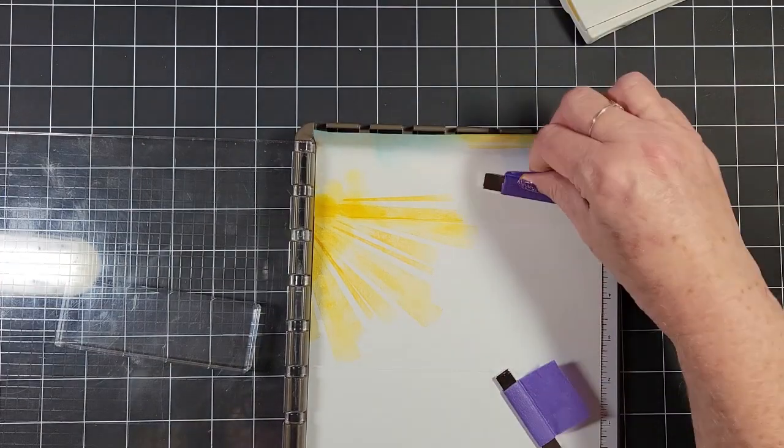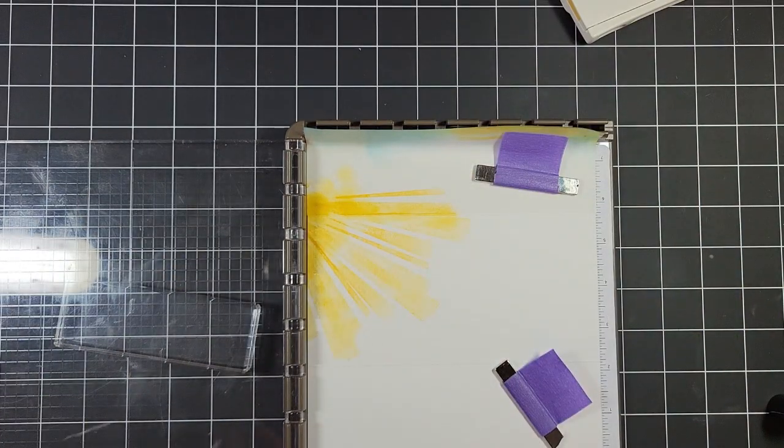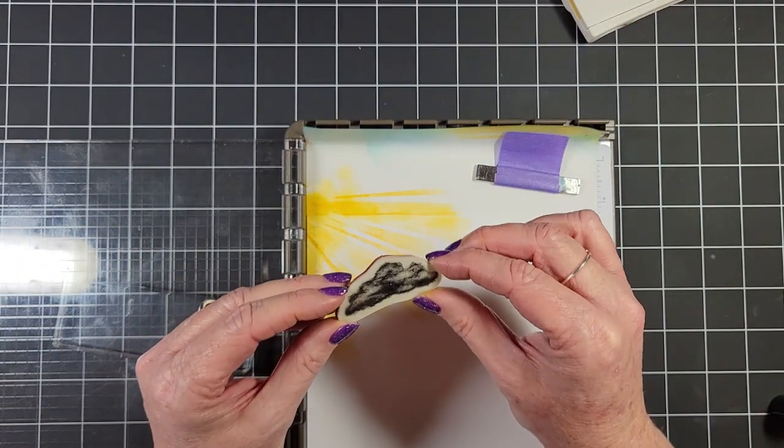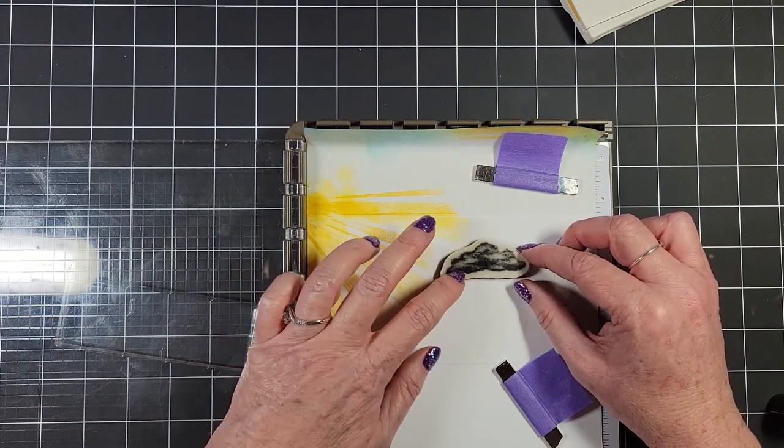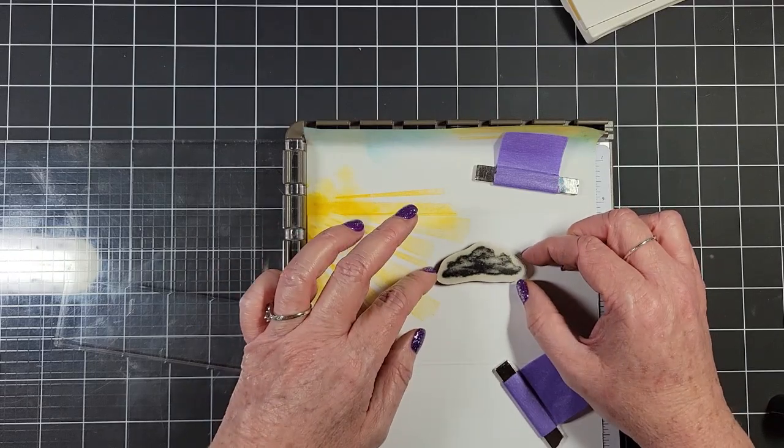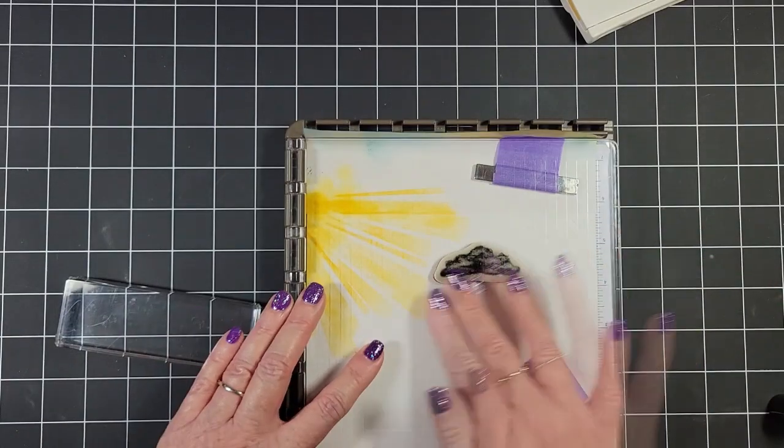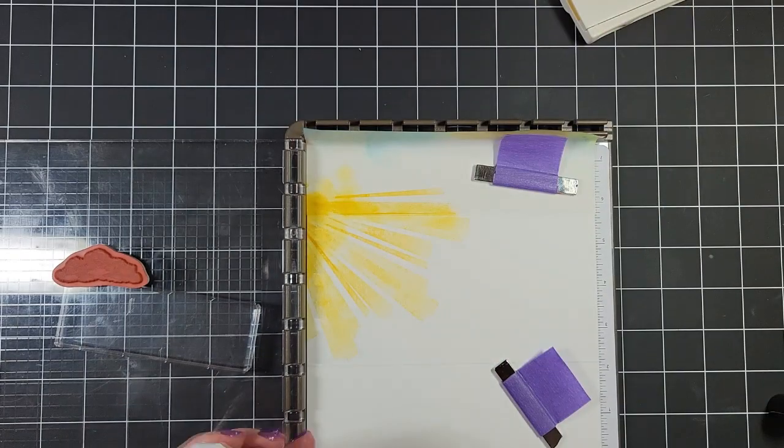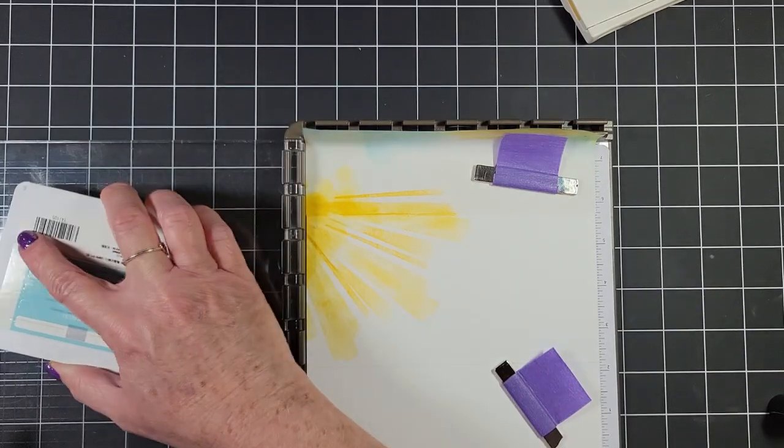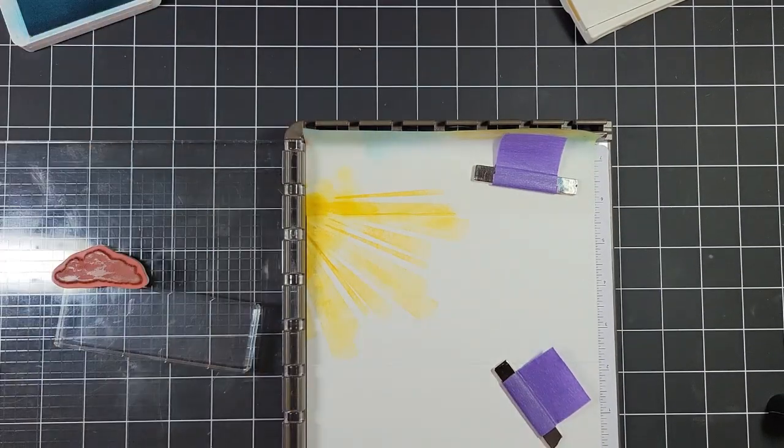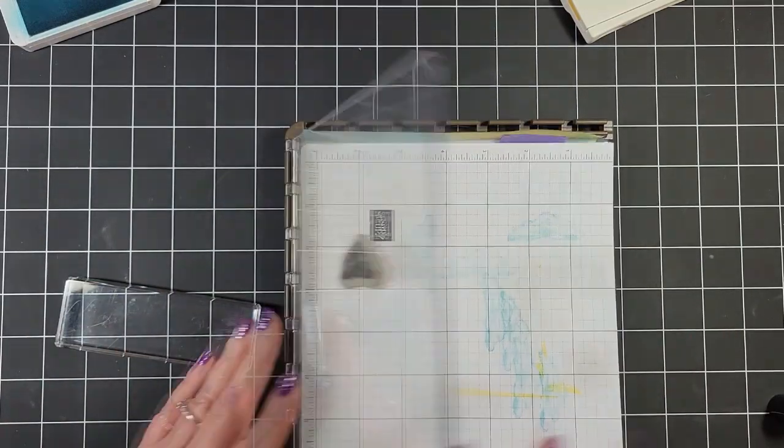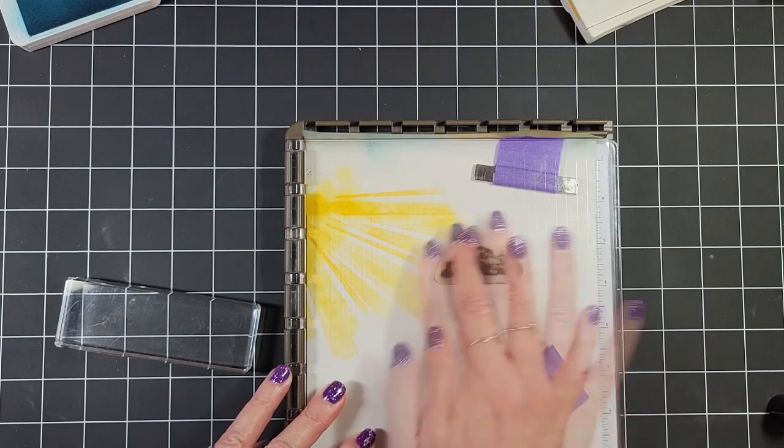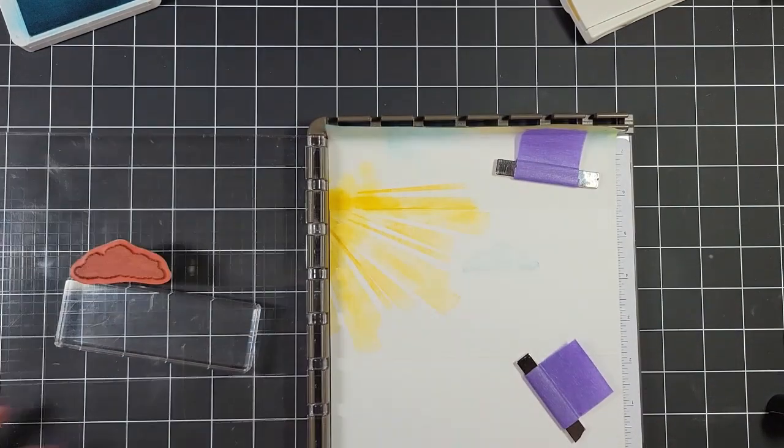So now I have my sun rays all stamped and ready to go. And I'm going to add in a couple of little clouds. So I decided that I want my clouds to be pretty soft and not have big edges, I guess is the best way I can describe it. So I'm doing a second generation stamping process here. So I'm inking up the cloud with balmy blue, using a scrap piece of paper to stamp off once, and then stamping it right onto my card.